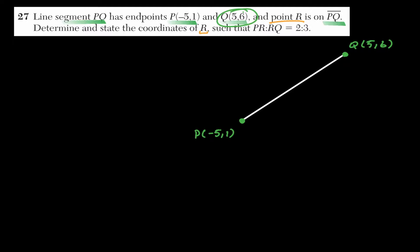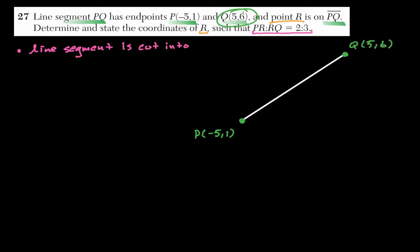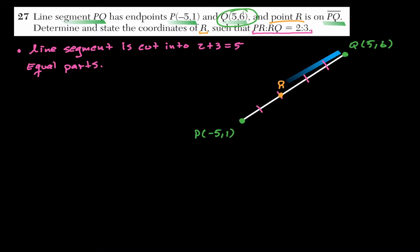R is not just any point — it creates a ratio of 2 to 3 between PR and RQ. If the line segment is cut in a ratio of 2 to 3, it is cut into 5 equal parts. So R lies 2 parts from P and 3 parts from Q.